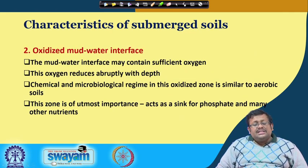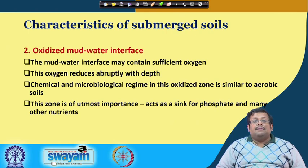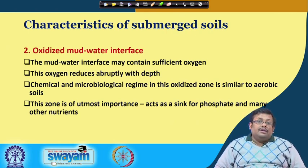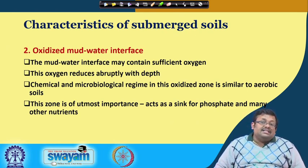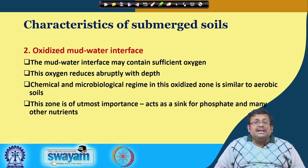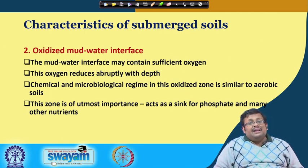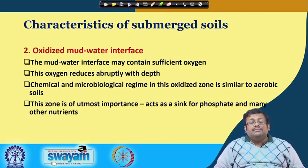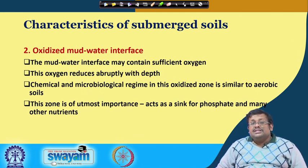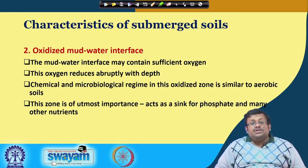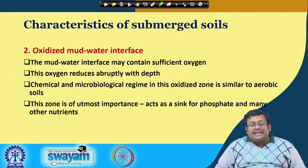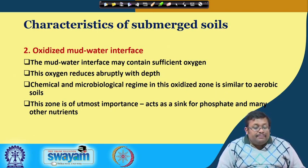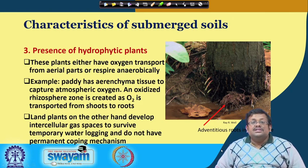The second characteristic is the oxidized mud-water interface, which may contain sufficient oxygen that decreases abruptly with depth. The chemical and microbiological regime in this oxidized zone is similar to aerobic soil, and this zone is of utmost importance because it acts as a sink for phosphate and many other nutrients.